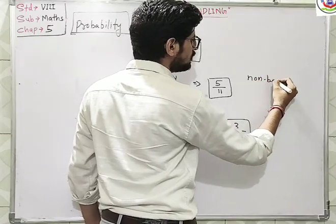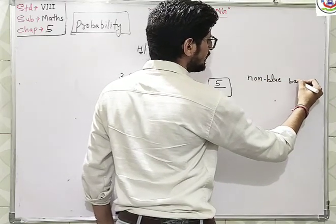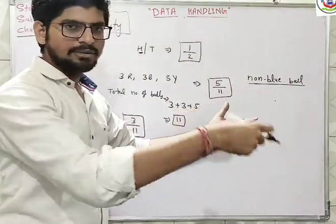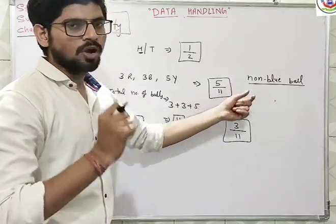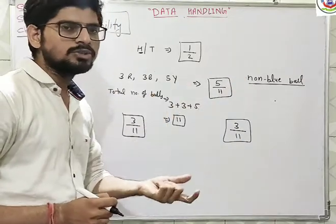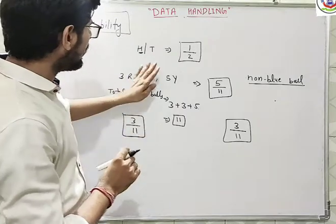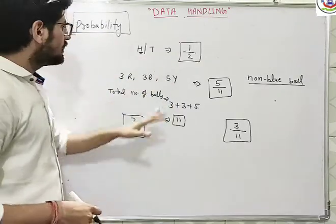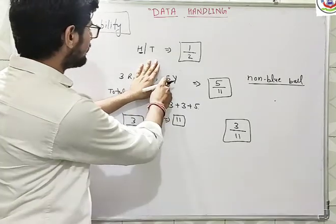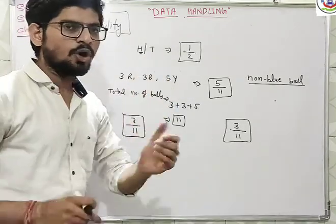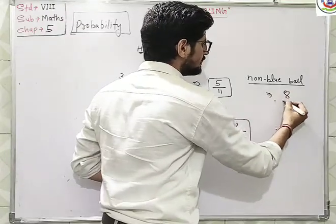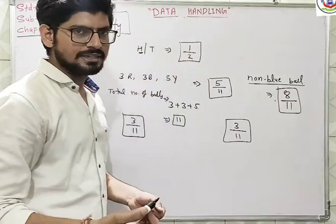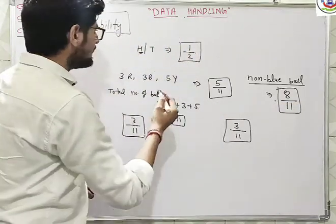If I ask you what is the probability of non-blue ball? If I am randomly picking a ball and it is a non-blue ball, meaning not a blue ball, what is the probability? So non-blue balls we have are 5 plus 3, that is 8, because 3 are blue balls and remaining 5 plus 3, 8 are non-blue balls. So this is 8 by 11, the total number of balls.